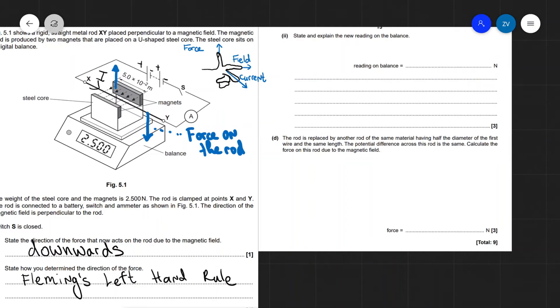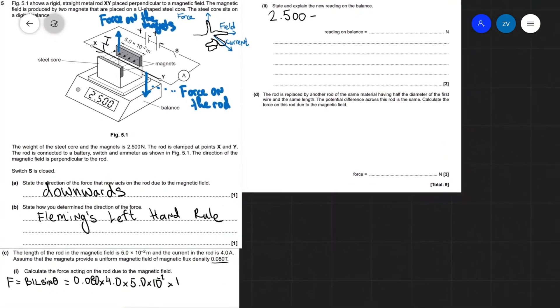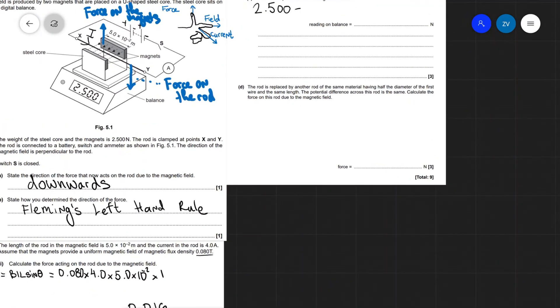So the actual force on the magnets will be upwards. So let's see the force on the magnets. And this is really counter-intuitive. This means the new reading on the balance will be 2.500 minus our force, which was 0.016, minus 0.016.